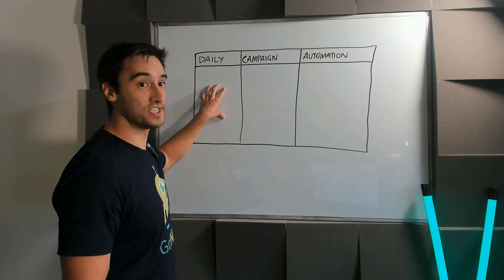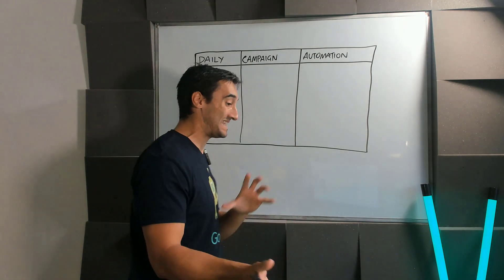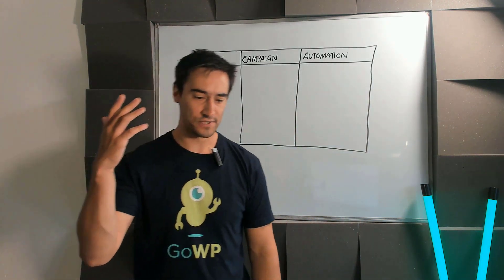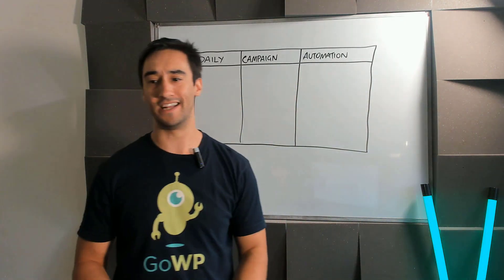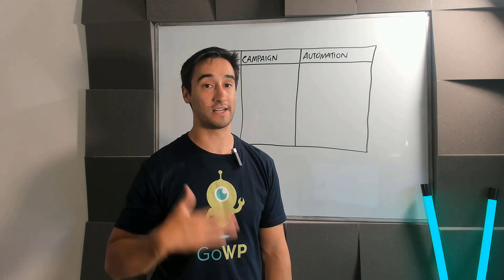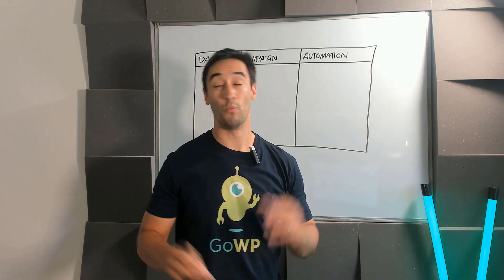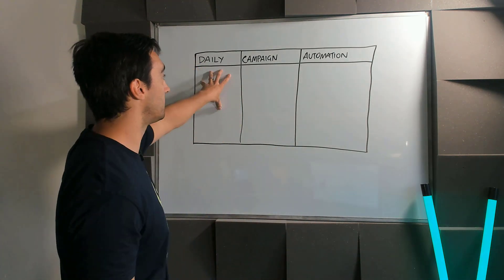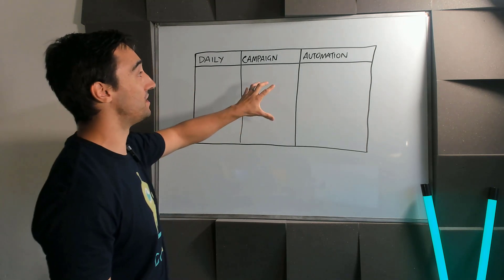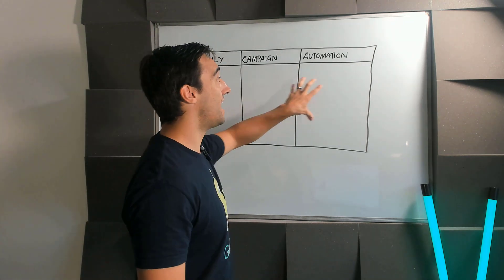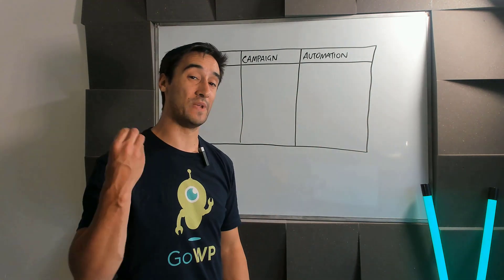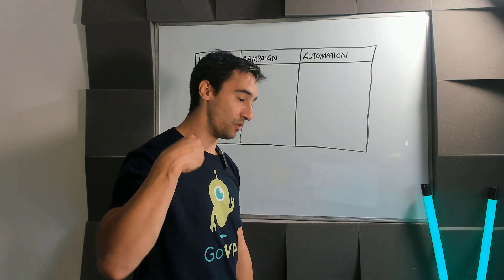The concept of a daily email might be very scary, but think of it as a daily test. There are subject lines, copy, messaging, email format — all of this stuff that you're going to use your daily email to start testing with your market. We're going to take what works in our daily emails and use it in our campaigns, then take what works in campaigns and use it in our automation.